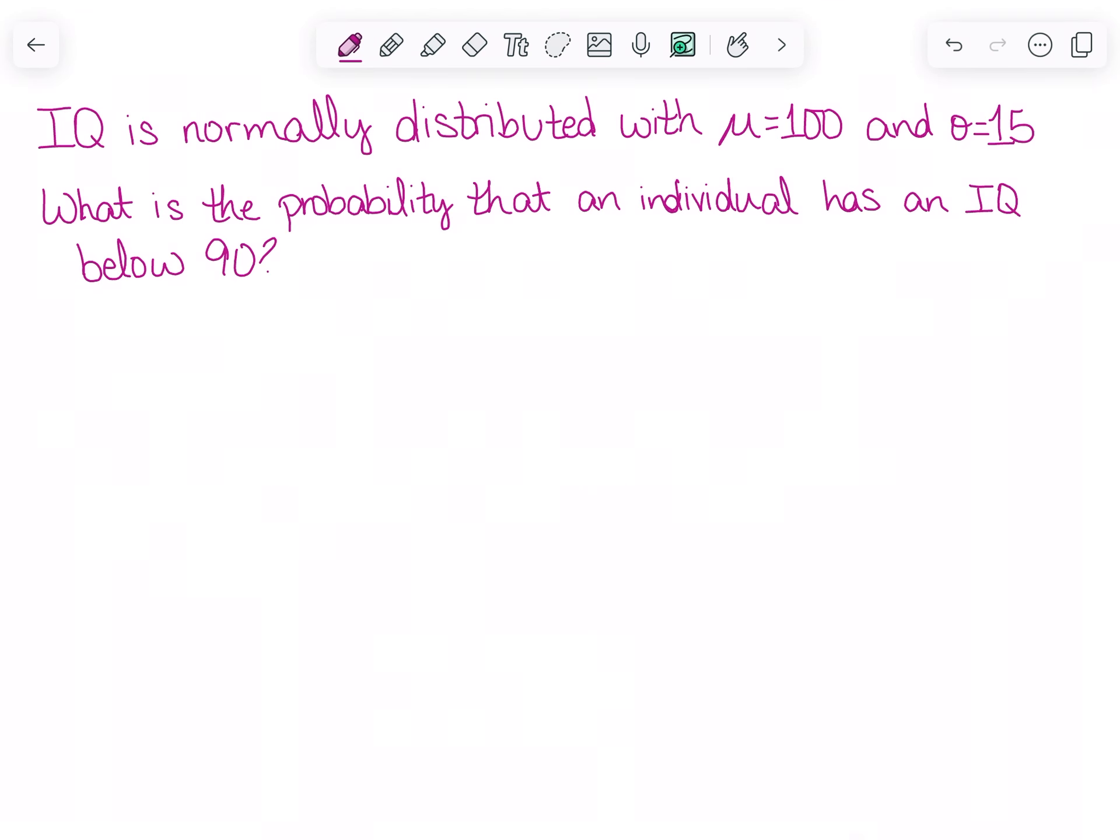IQ is normally distributed with a mean of 100 and a standard deviation of 15. So what's the probability that an individual has an IQ below 90?